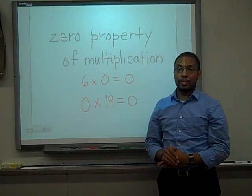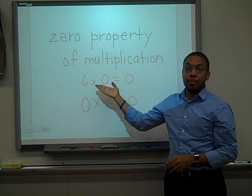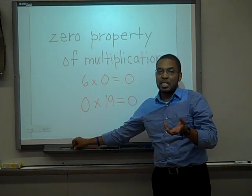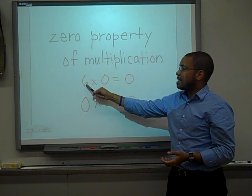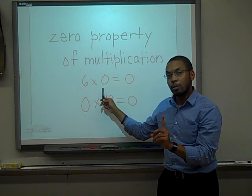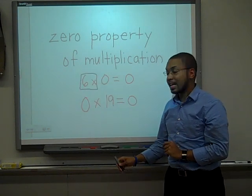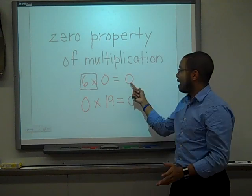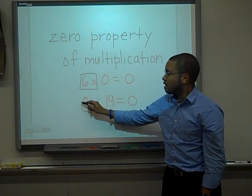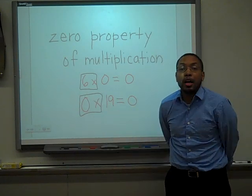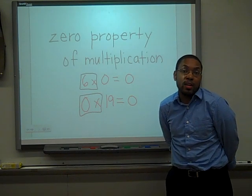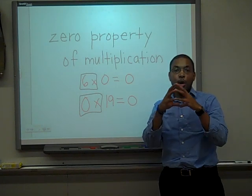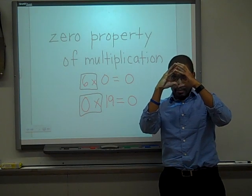The zero property of multiplication is fairly simple: any number times 0 will give you 0 — that is true all the time. Because of the basic meaning of multiplication: 6 times 0 means to add 0 six times, which gives you 0. And 0 times 19 means to write 19 zero times — I'm not going to write 19 at all. If I didn't write anything to start with, I had nothing, so the answer is nothing. Any number times 0 will give you 0.